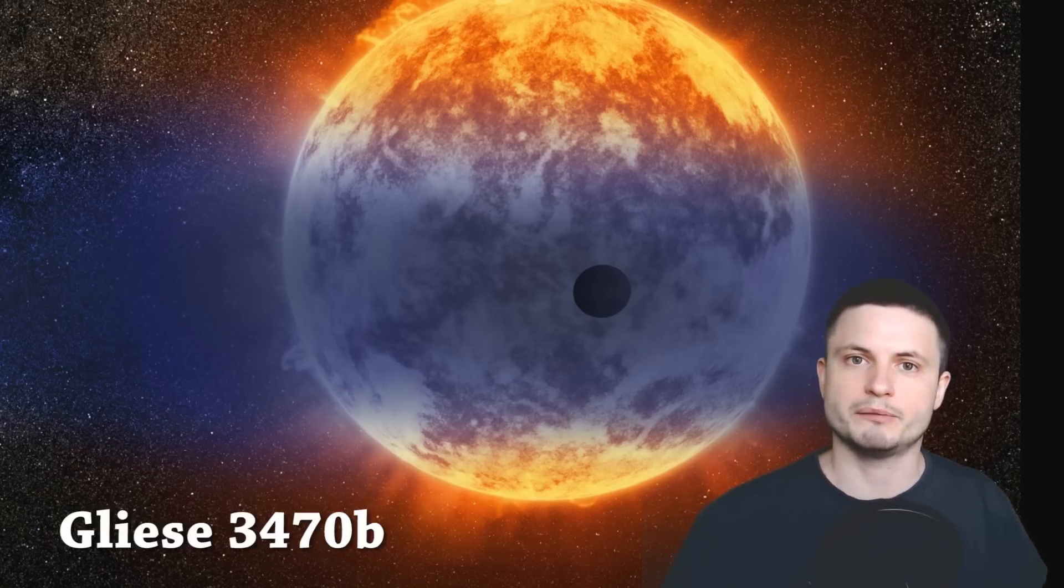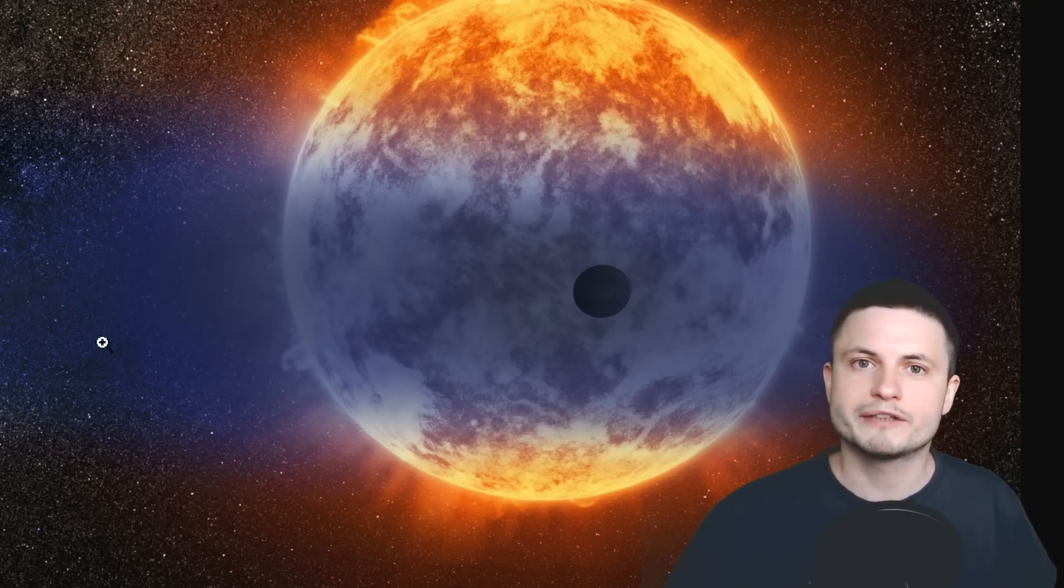The exoplanet we're talking about today is known as Gliese 3470 B. It's actually been in the news a few times and the most recent time was when we talked about how this exoplanet has one of the highest, if not the highest, atmospheric evaporations compared to other planets we've discovered. In other words, the planet that you see right there is losing a lot of its atmosphere due to the proximity to the star.